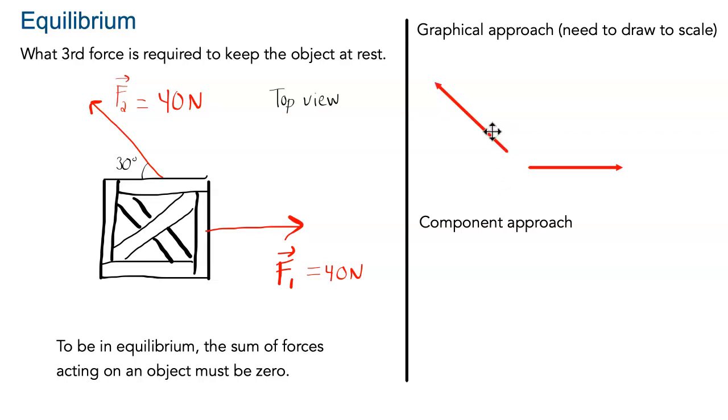What we want to do is to put them tip to tail. So I don't know if you recall how to do this, but the idea is that you start with the first vector and then you put the second vector just to continue it. What we want to do if the third force is to bring the sum of force back to zero is that the third force should start at the end of the second vector and bring us back to the first one.